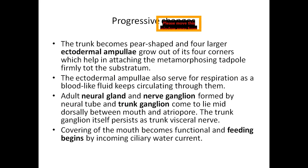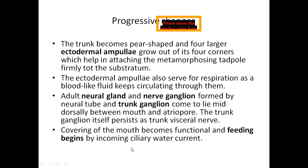In the adult, there is formation of the neural gland and nerve ganglion from the neural tube. The trunk ganglion comes to lie mid-dorsally between the mouth and the atrial aperture. The trunk ganglion itself persists as the trunk residual. The digestive system, which was degenerate in the larval form, starts enlarging and becomes functional. The adult starts feeding through the ciliary water current that enters the branchial aperture or incurrent siphon, passes through the pharyngeal stigmata via a filter feeding mechanism, and water moves out through the atrial aperture.